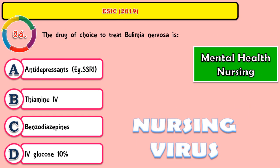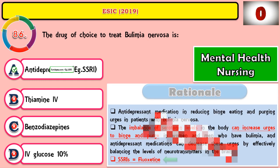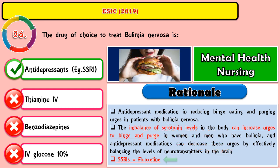Question 86: The drug of choice to treat bulimia nervosa is? The answer is antidepressants, especially the SSRI group — selective serotonin reuptake inhibitors. Antidepressant medication helps in reducing binge eating and purging urges in bulimia nervosa, especially when there is an imbalance in serotonin. These drugs increase serotonin levels and can decrease the urges to binge in those who have bulimia, effectively balancing serotonin levels and relieving bulimia nervosa symptoms.